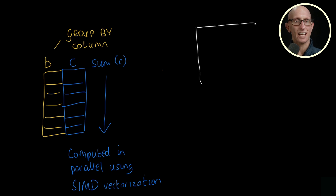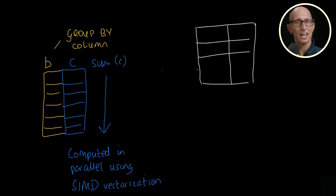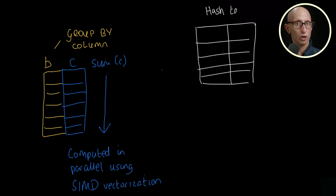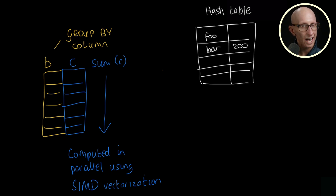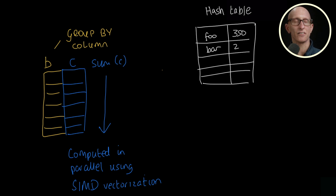The fastest way to aggregate data per grouping key is to use an in-memory hash table with the grouping column as the key and the aggregated column as the value. Those values get updated as we go through the data for each key.